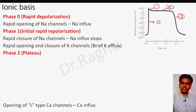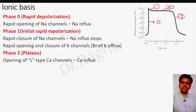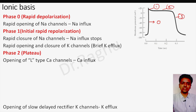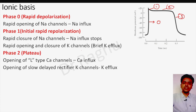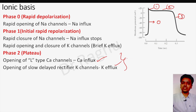Phase two: L-type calcium channels open, so calcium influx begins. Slow delayed rectifier potassium channels also open, causing potassium efflux. One positive ion is moving in and another positive ion is moving out, creating a balance, and hence there is no much change in the membrane potential — resulting in the plateau phase.